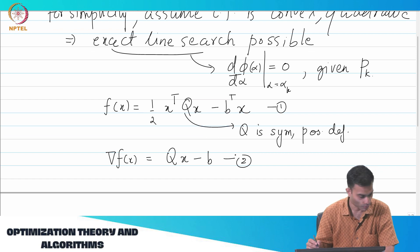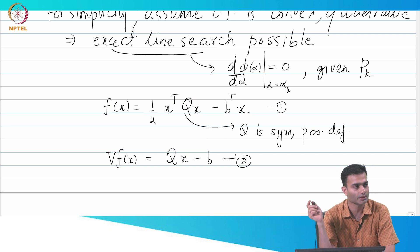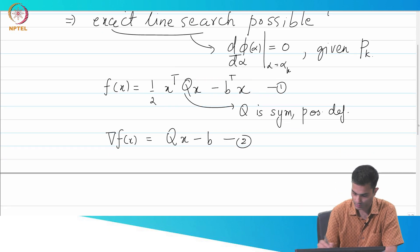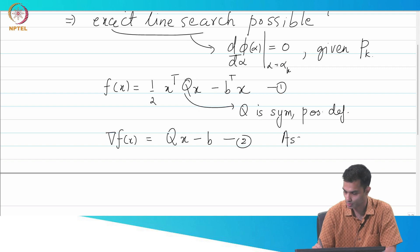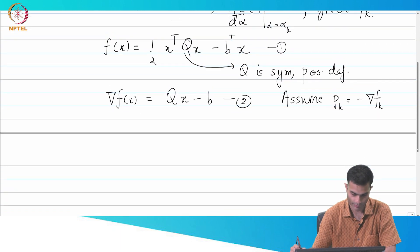So let's call this equation one, this is two. I am going to, for this proof, assume that we are doing steepest descent, not any general descent direction. We will assume steepest descent. So let's note that: assume p_k equal to minus grad f_k. This is it.